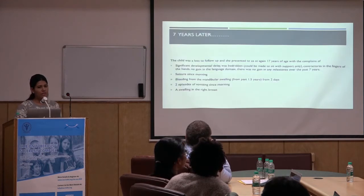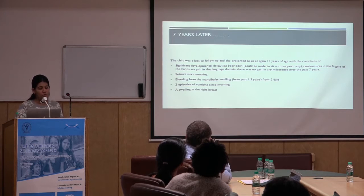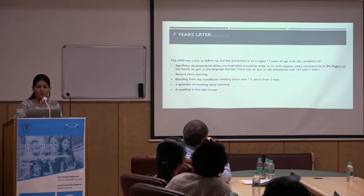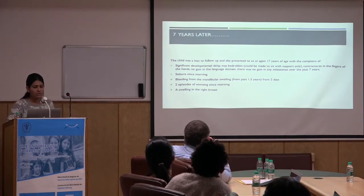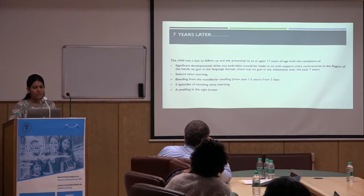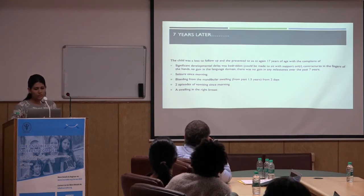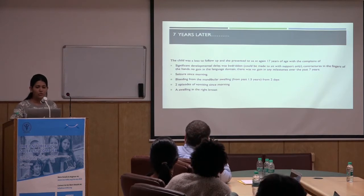But the story doesn't end here. The child was lost to follow-up and presented to us seven years later. The developmental delay was still persistent. The child was more bedridden with contractures in all four limbs. There was no gain in language domain and no gain of milestones for the past seven years. The seizures were uncontrolled. There was bleeding from a mandibular swelling for the past two days, a swelling persisting for the past one and a half years, two episodes of vomiting since morning, and a swelling in the right breast.